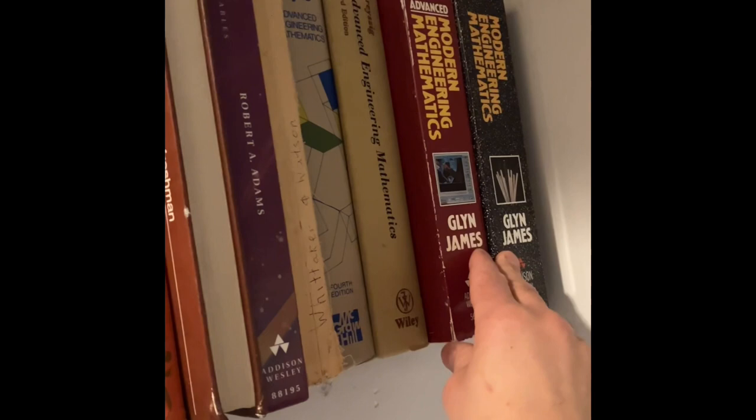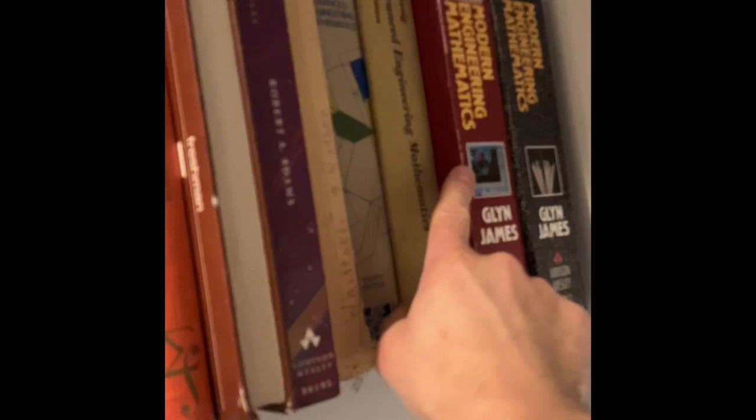And so on. We have there the Krysic edition. Krysic is down here. Advanced Modern Engineering Mathematics by Glyn James.